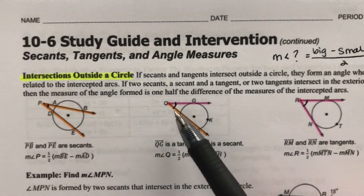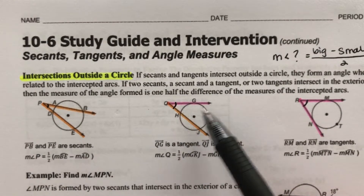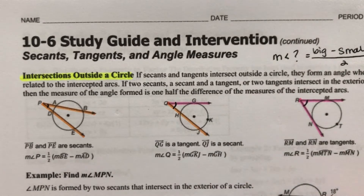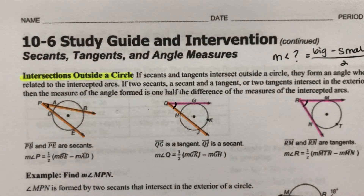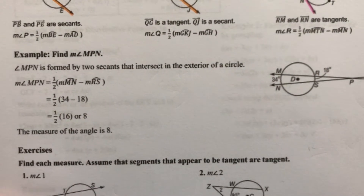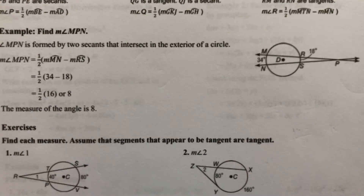It might give you the measure of this angle and not give you one of these arcs, but you'd still solve the same way — just change the part you're looking for. So let's do an example, talk through it, and then we'll hop down and do some more examples a little quicker.